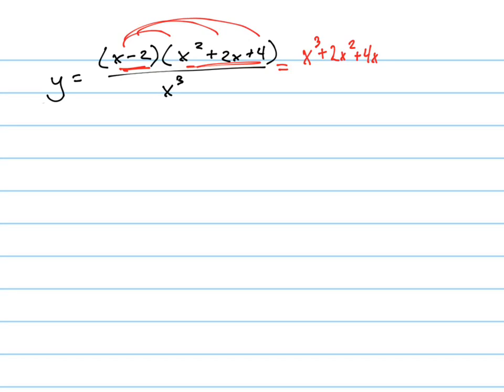And now I'm going to distribute the negative 2 in. Make sure you bring the negative with it. So that's minus 2x squared, minus 4x minus 8.